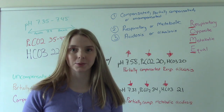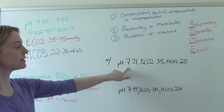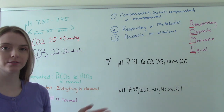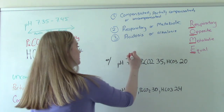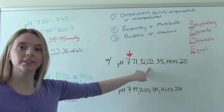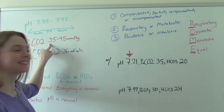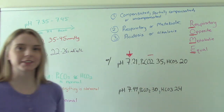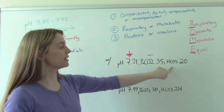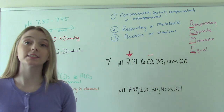Let's do a few more practice ones. Our next example: our pH is 7.21 — not normal, and it's low. Our CO2 is 35 — that is normal, so I usually do a neutral sign for that. And then our HCO3 is 20 — that's not normal, and it's low.